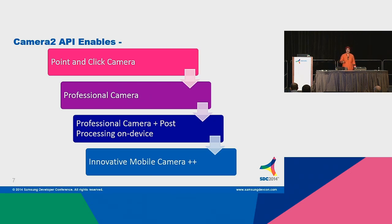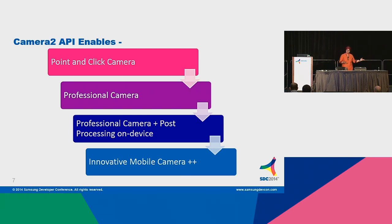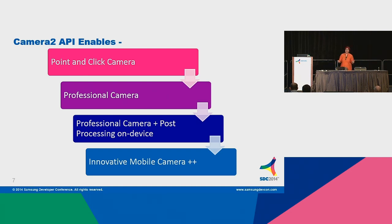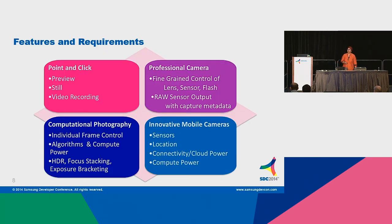We have these quad-core processors now — there's a lot of processing power available. Even before this API came out, there were applications on the app store that will process raw for you. The use case why they were built was because people didn't want to carry their laptops everywhere — they took the DSLR and a tablet to use the app there. The last use case is what I've named the innovative mobile camera plus plus, which is basically that with this new API, it's going to enable a lot of new use cases which our creative developer community is going to use and come up with some really killer applications.